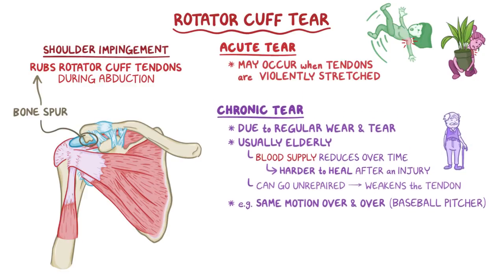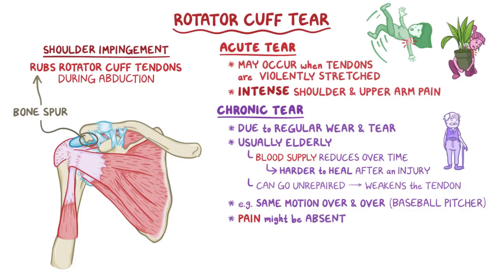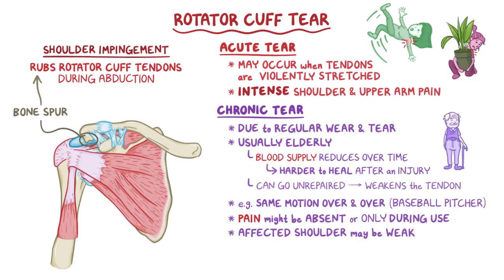In an acute tear, there can be intense shoulder or upper arm pain, whereas in a chronic tear, the pain might be absent or only occur when using the affected shoulder. The affected shoulder may also be weak, specifically with abduction or rotation.